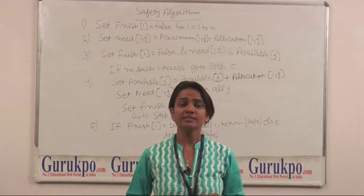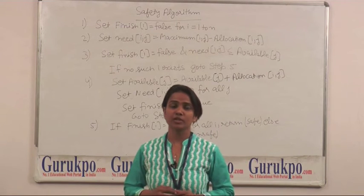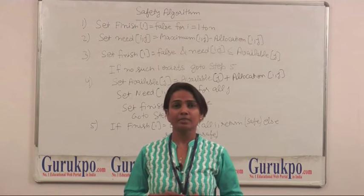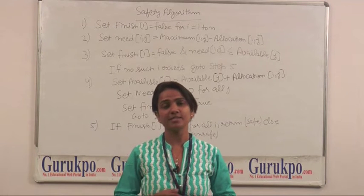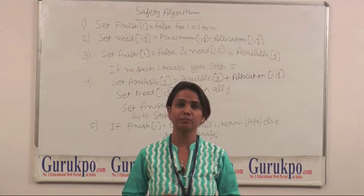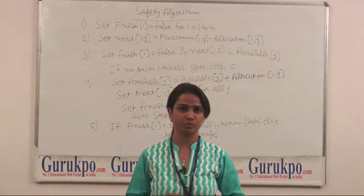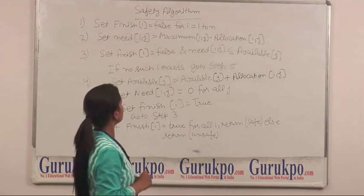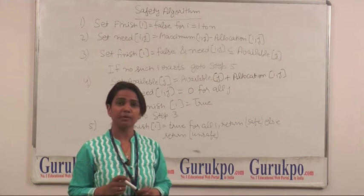First step, we set the vector finish equals to false. Finish will tell us that the execution has been completed and the process will release all its resources. So we set need equals to maximum minus allocation.